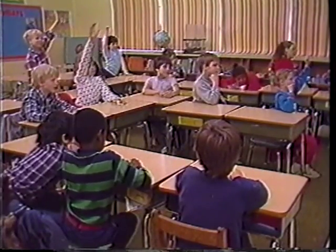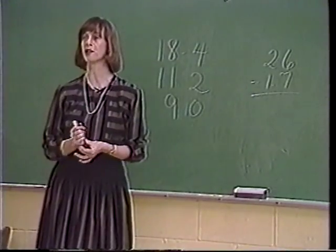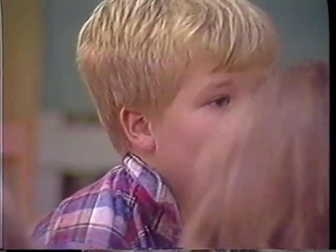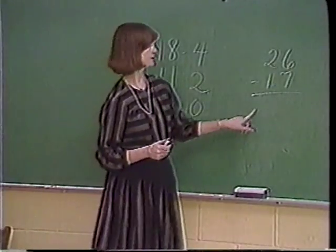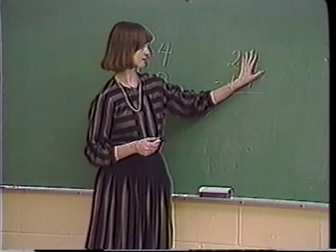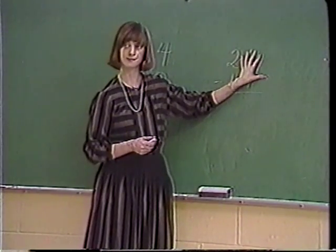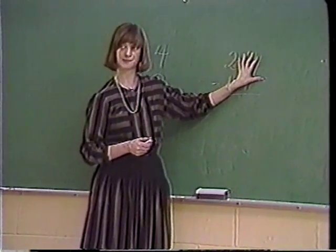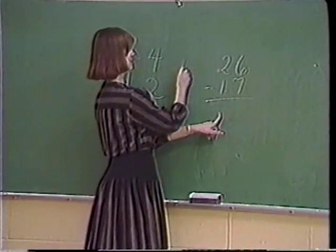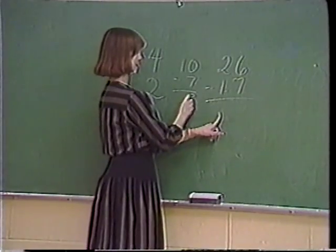Okay, Gary, we'll let you try first. What do you think the answer is? Gary: 9. You take the 6 and the 7 off of the 17 — like I did last time — and then take off 10, and that will be 10. And take off 7 more, and that will be 3. And add the 6 back on, and that will be 9.